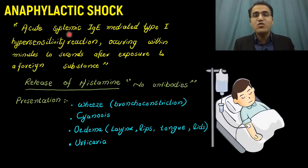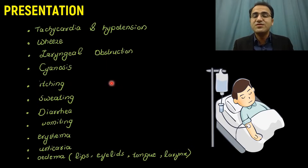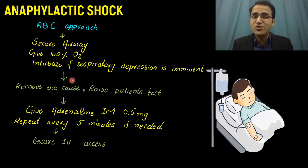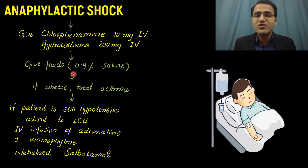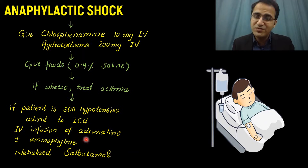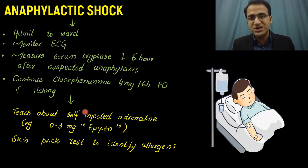In summary: anaphylactic reaction is caused by release of histamine. We discussed precipitating factors and the presentation, with laryngeal obstruction and wheeze being the most important. The ABC approach: protect airway, raise patient's feet, give adrenaline, chlorpheniramine, and hydrocortisone. If still hypotensive, admit to ICU and start IV adrenaline infusion with aminophylline and nebulized salbutamol. Teach the patient about self-injected EpiPen when discharging.